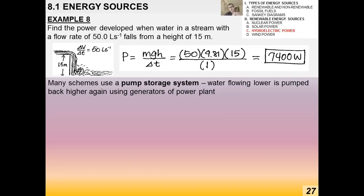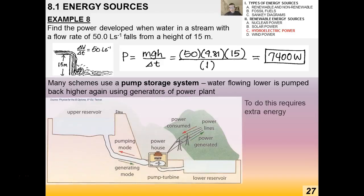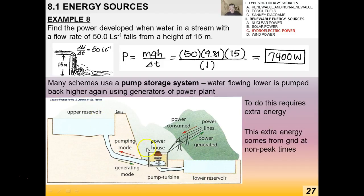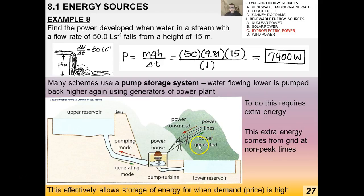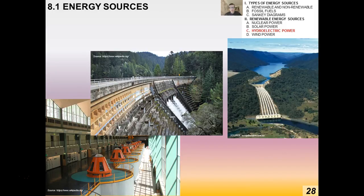In pump storage, extra energy from the grid — used at non-peak times — pumps water back up to the upper reservoir. Water stored in a reservoir is essentially stored potential energy, stored electricity waiting to be used. When demand or price is high, the power company can release that water and generate more electricity. This allows effective energy storage.